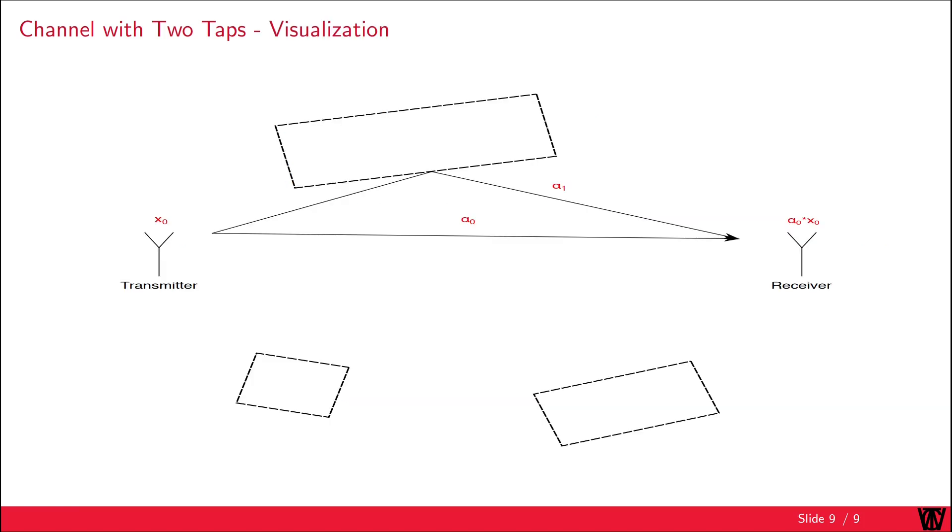The illustration of the two-tap channel is a bit different. Transmitting the first symbol is similar to the previous case. We transmit over the direct path with alpha 0 and therefore receive alpha 0 times X0, ignoring the noise. However, X0 will also be transmitted over the second path alpha 1, which has a delay. The delayed signal over the upper path interferes with our second transmission of X1. Consequently, the second time slot will have the transmission of X1 over the direct path combined with X0 over the upper path.